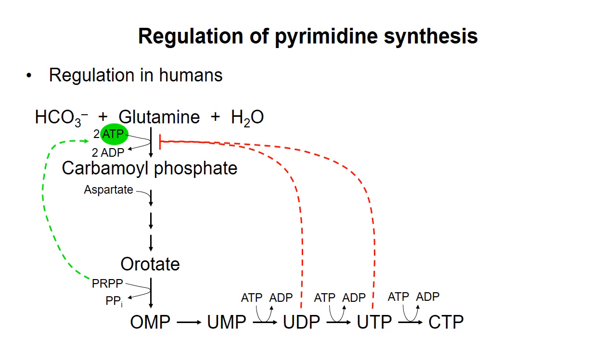We've now seen how the cell makes ribonucleotides, which are substrates for RNA synthesis. In the next video, I'll describe how deoxynucleotides are made.